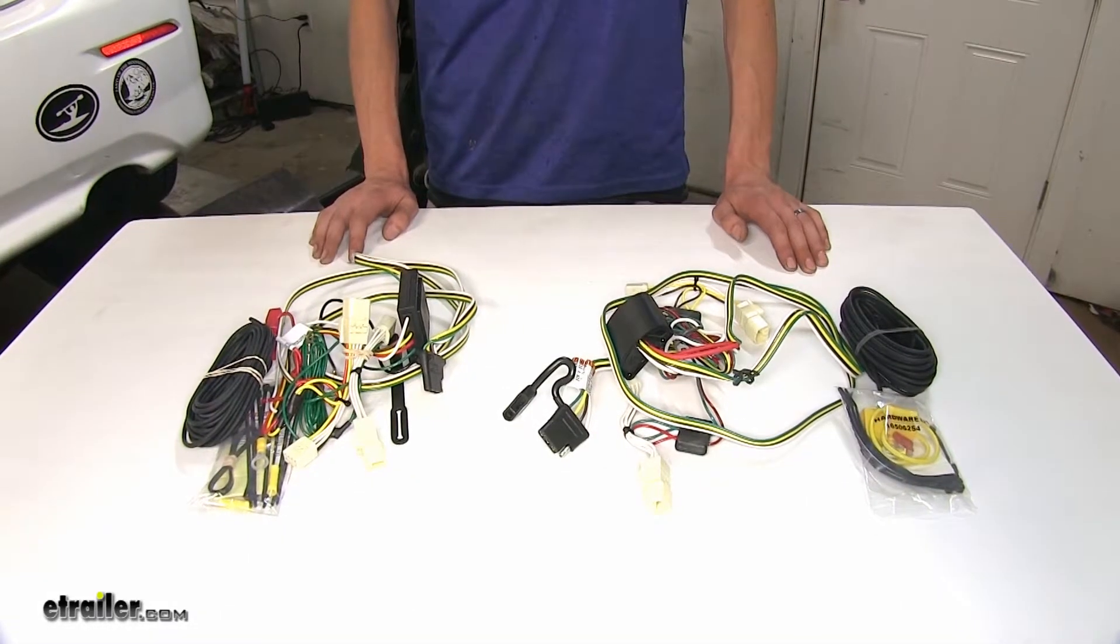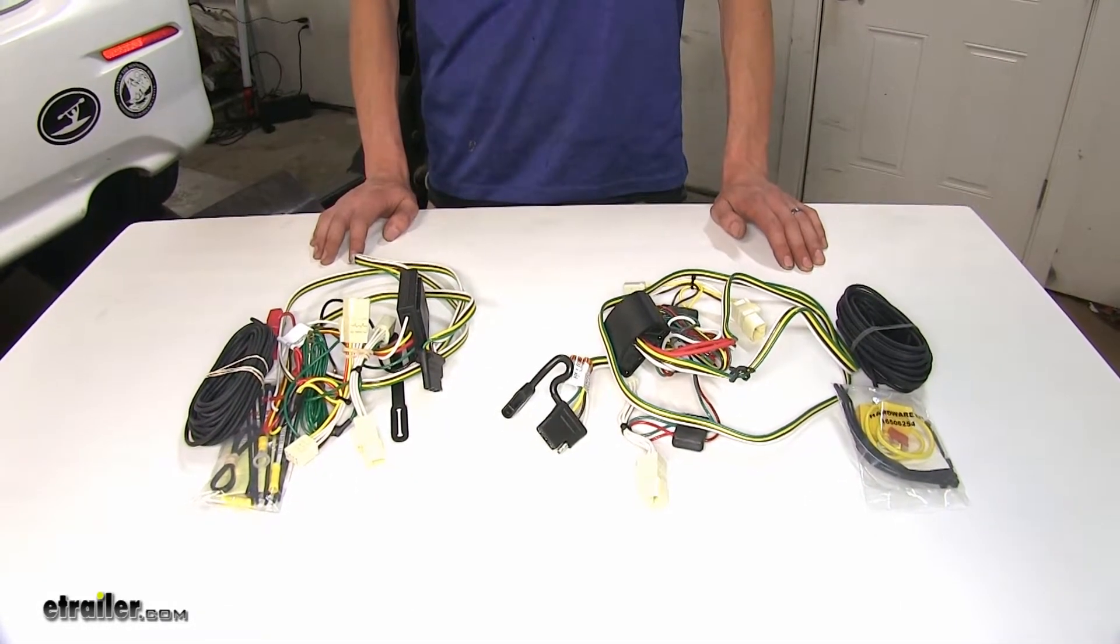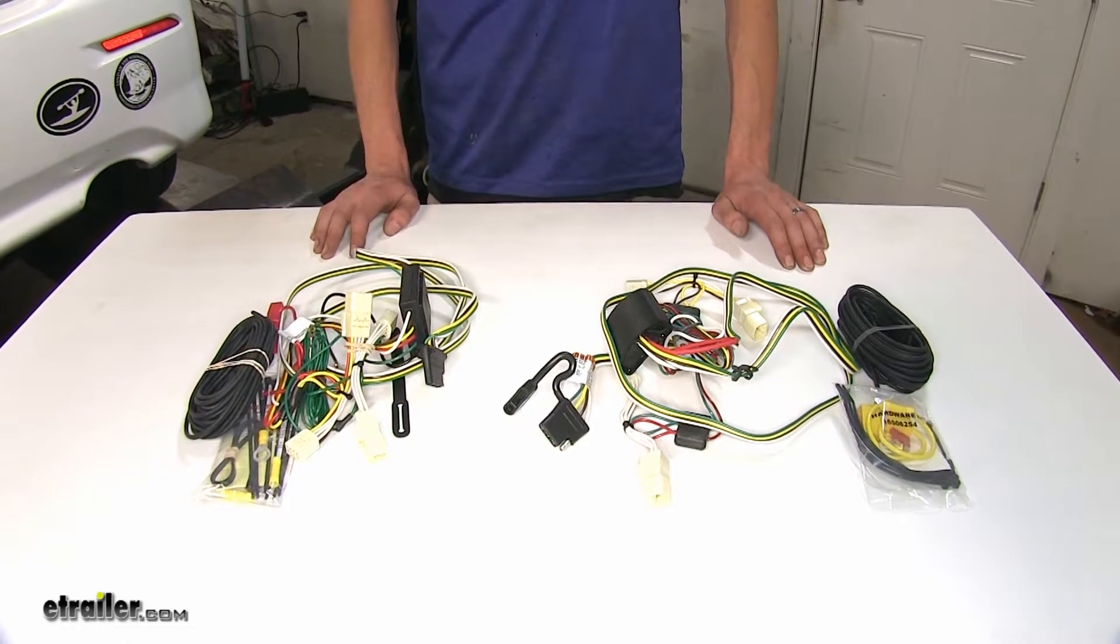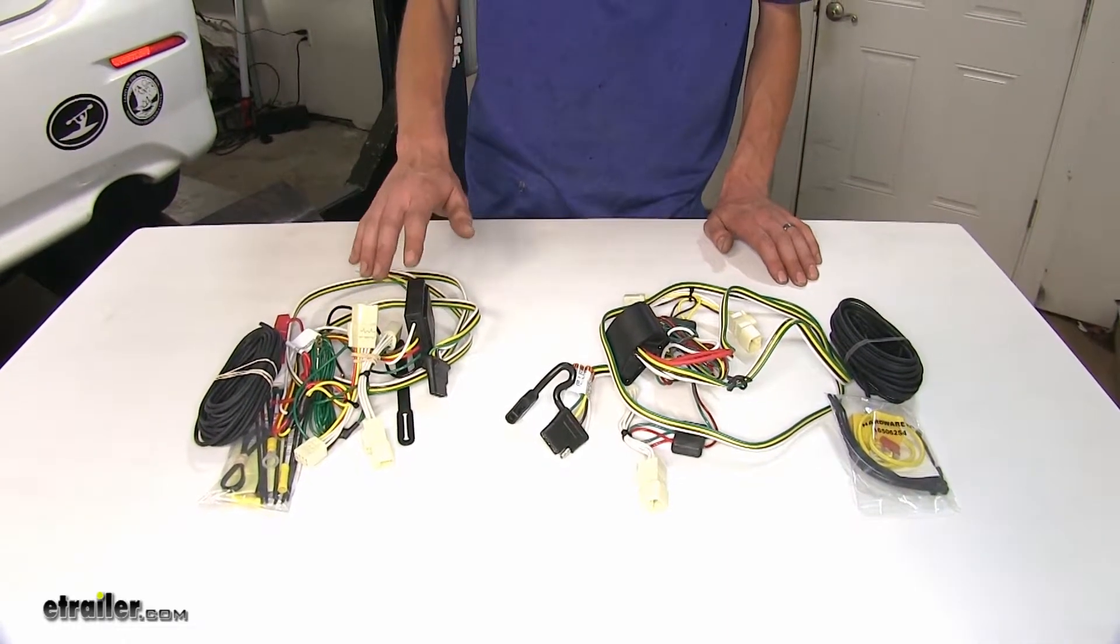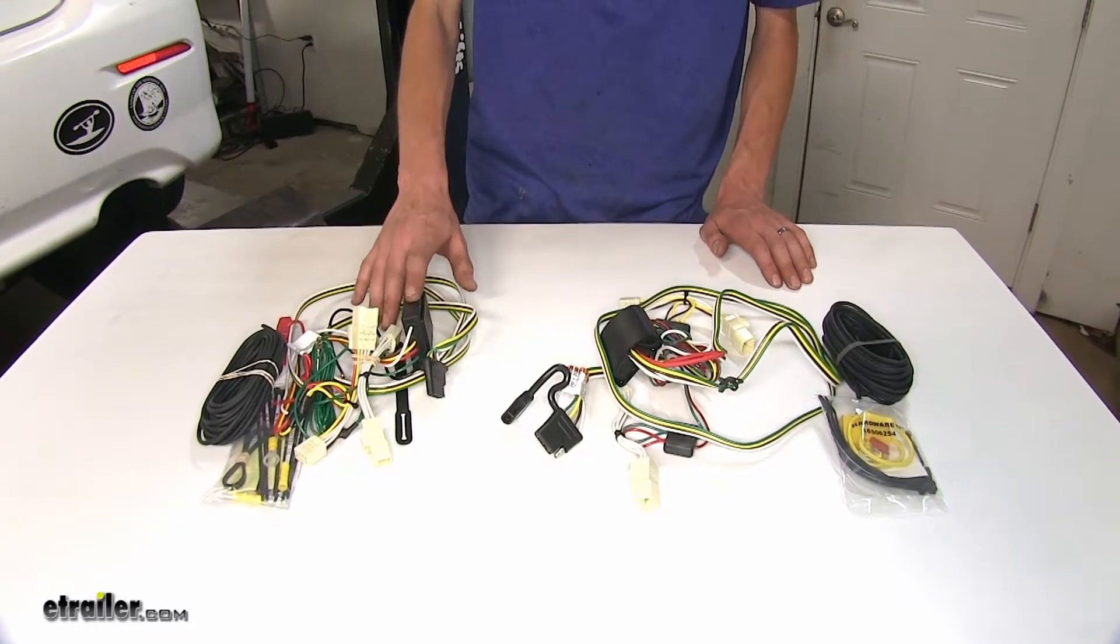It's all going to be personal preference really. The wiring harnesses are going to do the exact same job for you. Towing a trailer with a Matrix, you're probably not going to need that extra power output because you're not going to have a trailer large enough to have a lot of lights on it.